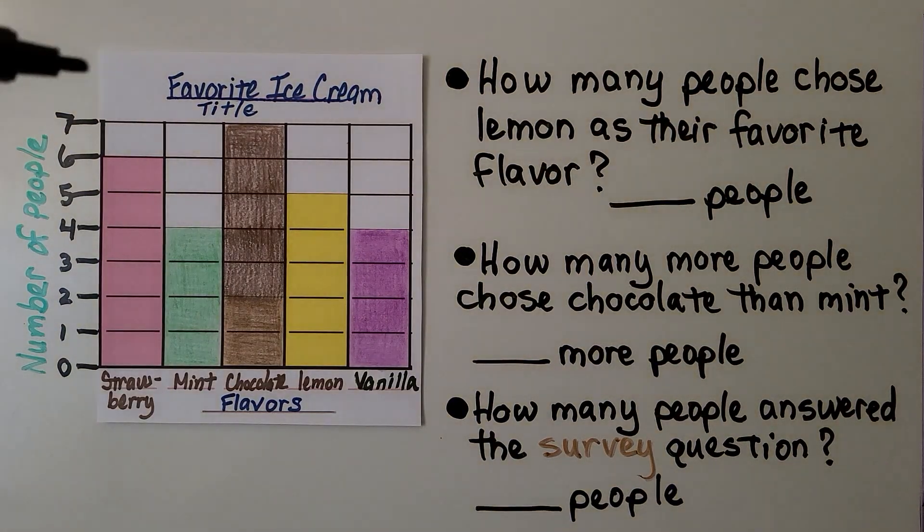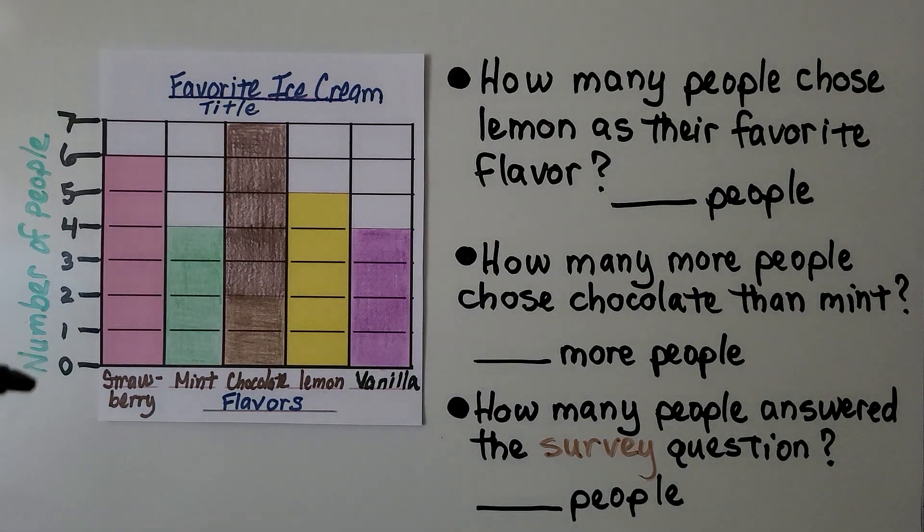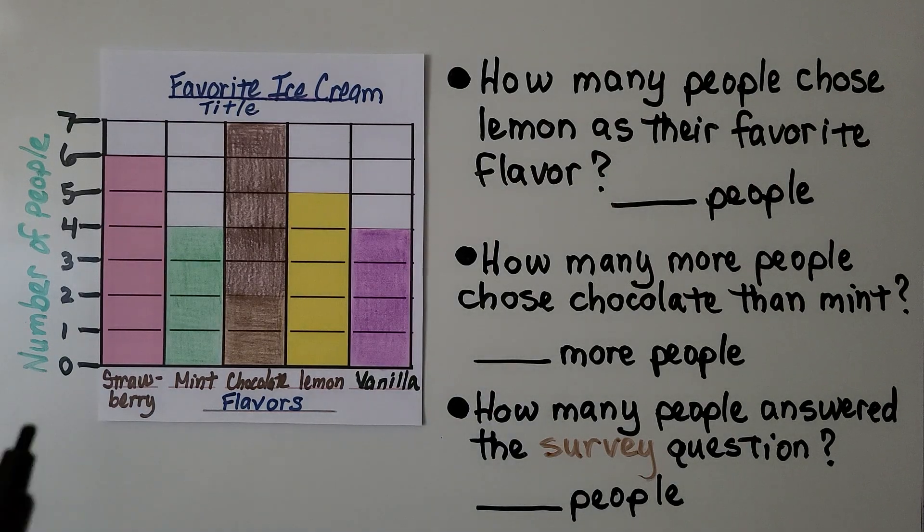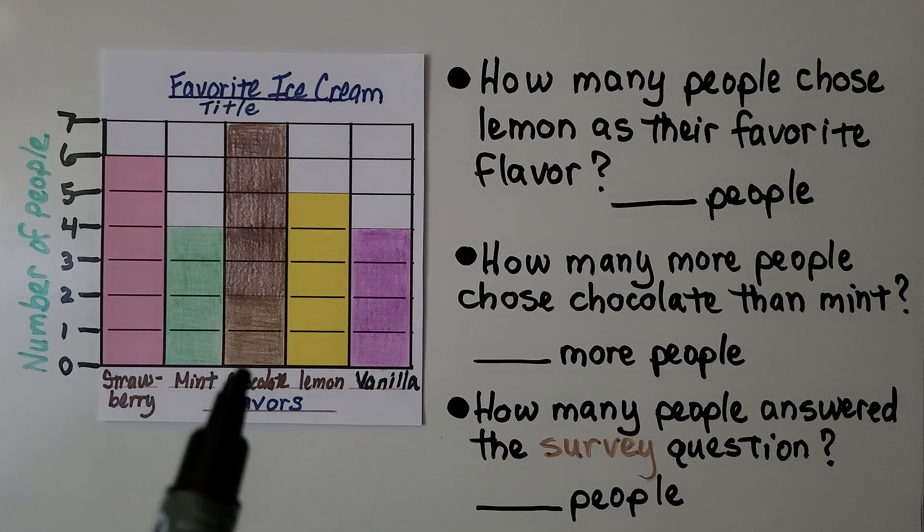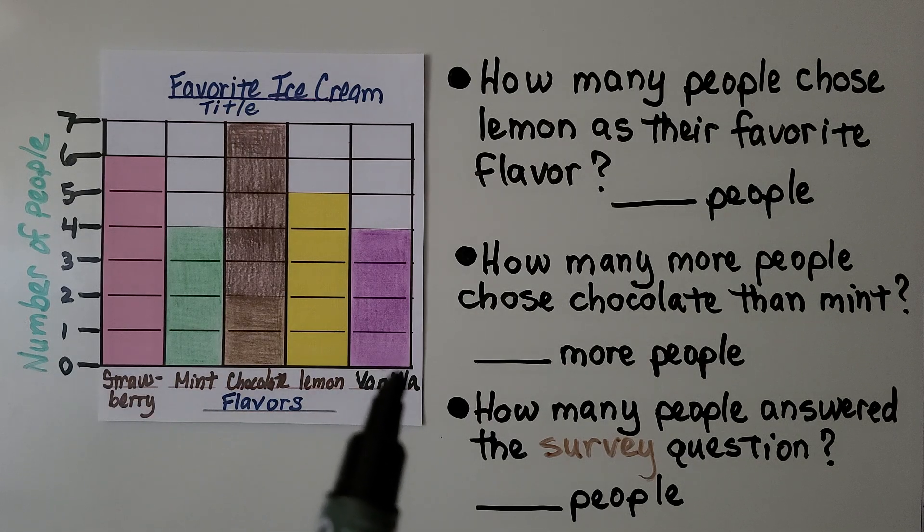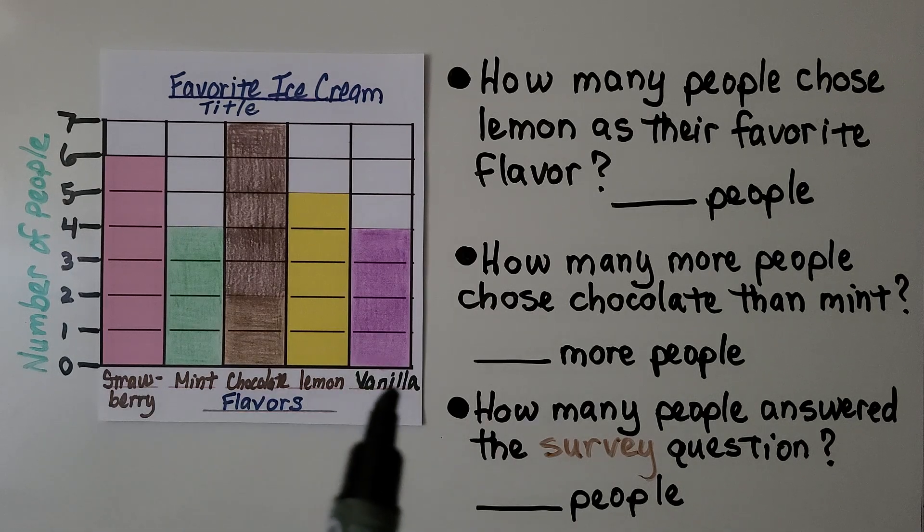Here's a bar graph. We see the title is favorite ice cream. We see our scale name is the number of people. And this bar is for strawberry, this one's for mint, this one's for chocolate, this one's for lemon, this one's for vanilla. And down here it says flavors. So these are all the flavors.